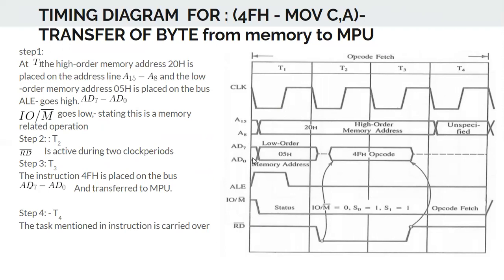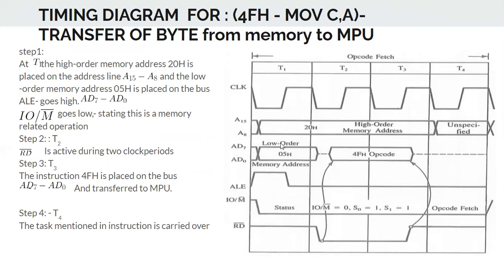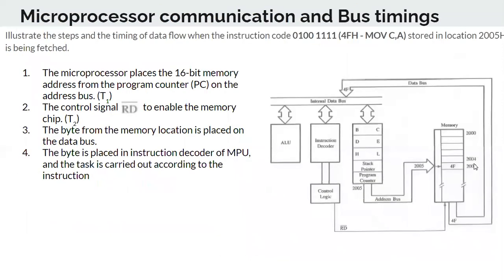In the timing diagram, the address lines, data lines, address latch enable (ALE) signal, and the IO/memory read signal are shown. These all work together to fetch the data. During the first clock period T1, the higher-order address — A8 to A15 — is placed on the bus. For address 2005H, the higher-order byte is 20H.